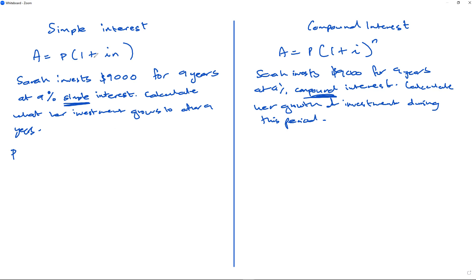The first thing I got here is my starting amount, which is always P. In this case, it's going to be $9,000. The number of years equals 9, so that's n. My interest rate as a decimal is 0.09, and I want to calculate the value of A.